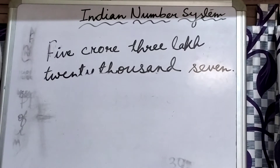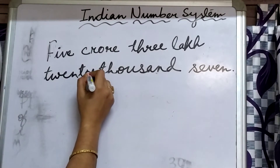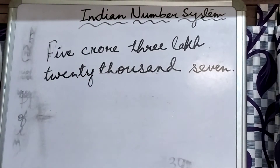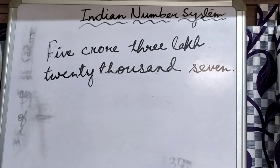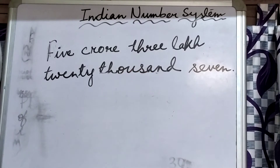My dear students, here I have written a number. In this video we will learn about how to write this number in numeral in the Indian number system. So firstly, let's read the number: five crore three lakh twenty thousand seven.